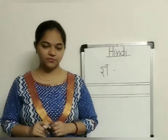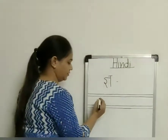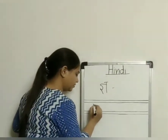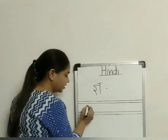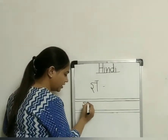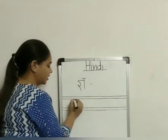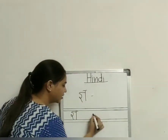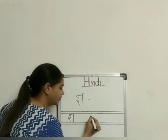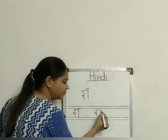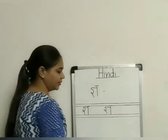So now we will learn how to write Gya. Make a loop like this. Then Gya se — take a turn, make a standing line. Okay? And a slipping line. Again, make a loop. Gya se — take a turn, slipping line, standing line, and again slipping line.